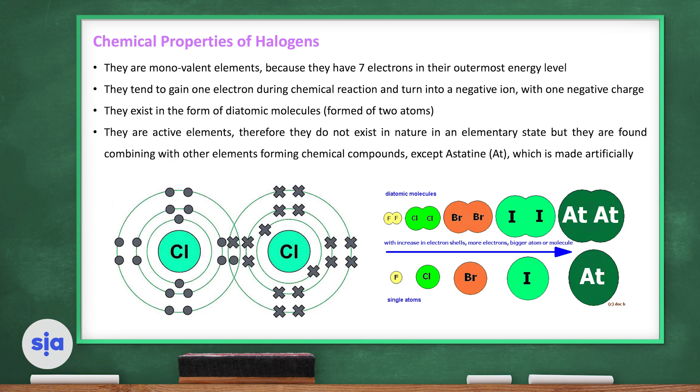They are active elements. Therefore, they do not exist in nature in an elementary state. But they are found combined with another element forming chemical compounds, except astatine, the last one, which is made artificially. This means that fluorine does not exist as a single atom but in diatomic molecules.